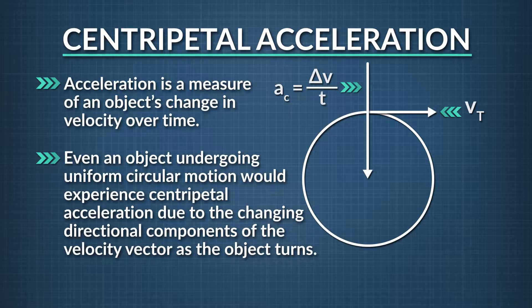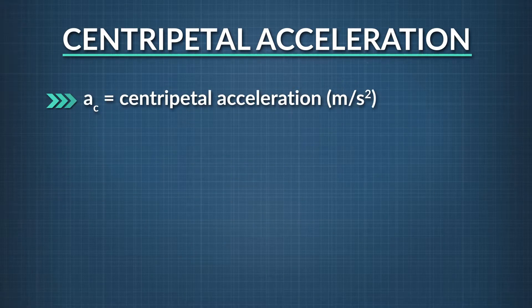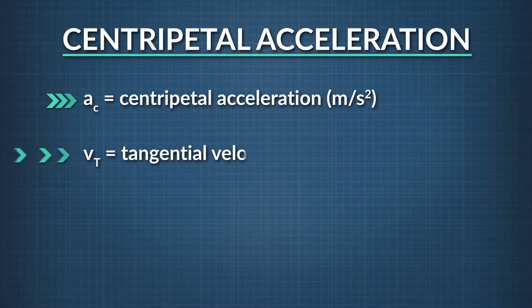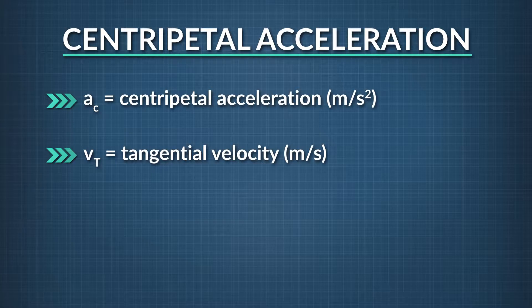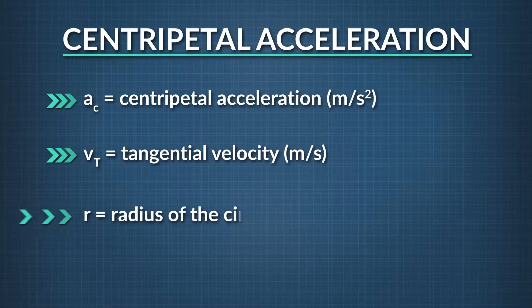This change in velocity — the centripetal acceleration — is always directed towards the center of the circle. Centripetal acceleration of an object undergoing circular motion can be calculated if the tangential velocity and the distance the object is from the center of the circle, or axis, is known. This distance is known as the radius.